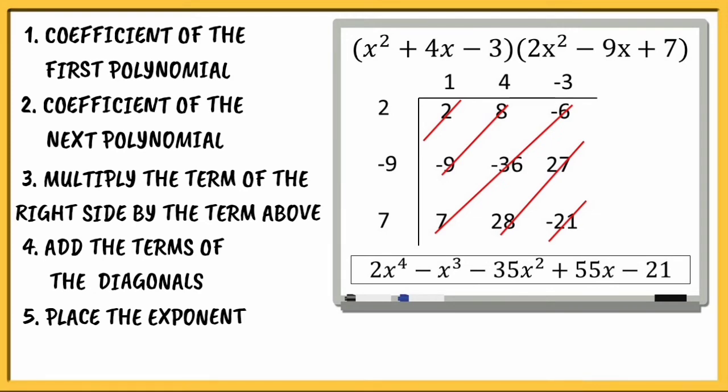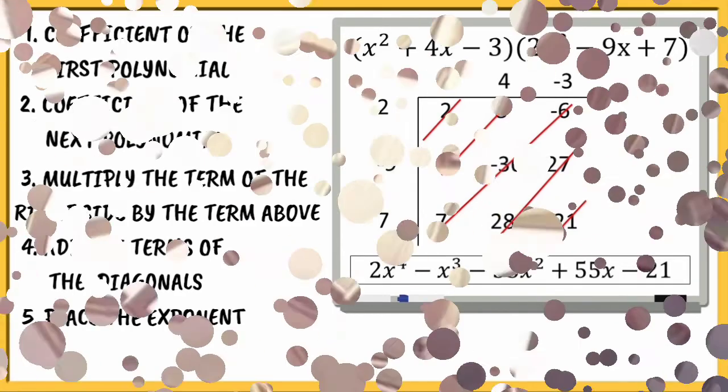Notice that the exponents are listed in order from highest to lowest. The final answer is 2x raised to 4 minus x raised to 3 minus 35x squared plus 55x minus 21.